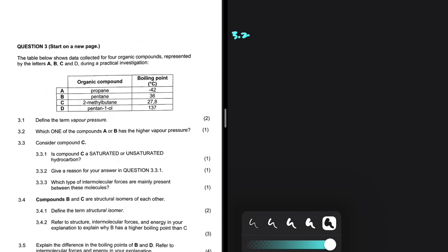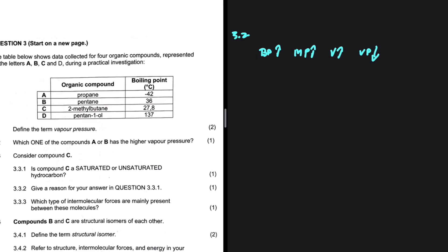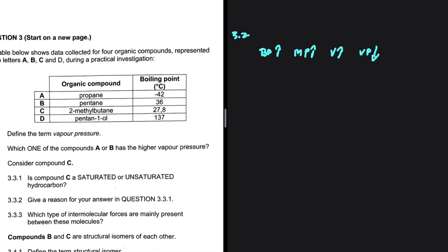So what do we know? We know that the higher the boiling point, the higher the melting point, the higher the viscosity, but the lower the vapor pressure. So which one of the compounds A or B has the higher vapor pressure?